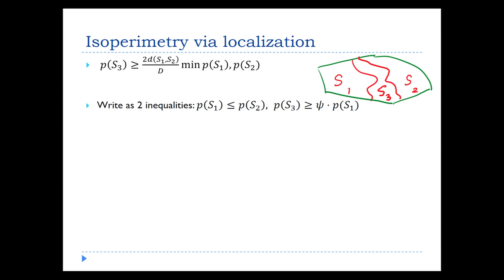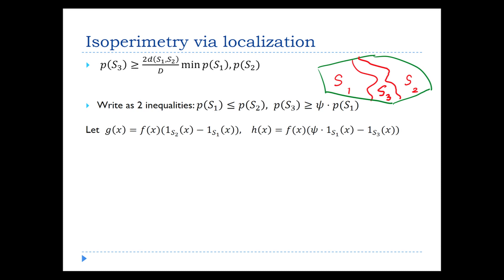So how do we go about proving this? What localization says is first, let's write it as two inequalities. The first inequality is just saying that the measure of one of those two subsets is smaller. And then the second one is saying that the measure of this third subset S3 is at least Psi times S1. Let's rewrite these in terms of just functions in space with indicators indicating these subsets. This is what we need to show: given that the integral of G is non-negative, the integral of H must be less than or equal to 0.